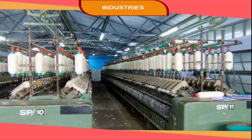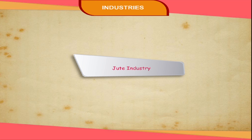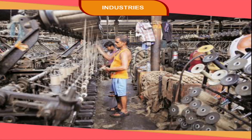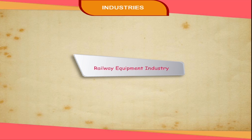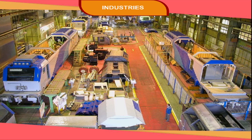India is another major producer of cotton textiles. Many jute mills are also located there. Railway rolling stock industry is largely developed in Europe and North America.